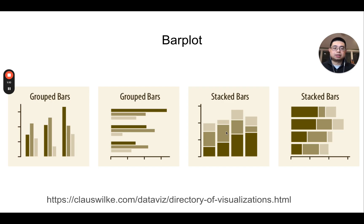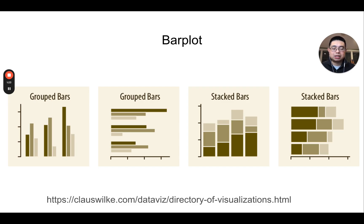The other variant is called a stacked bar plot. Different colors represent different conditions. In single-cell RNA sequencing papers, you will see those types of plots showing the composition of different cell types in a certain sample. You can also flip this 90 degrees.